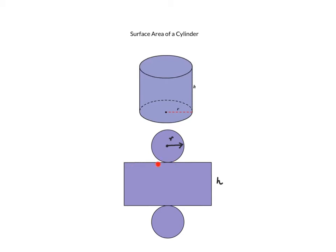This length is equivalent to the circumference of the circular top, and the formula for circumference is 2πr.